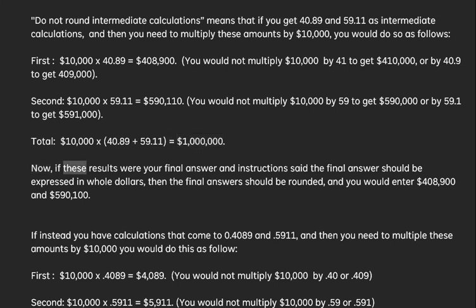Now, if these results were your final answer and instructions said the final answer should be expressed in whole dollars, then the final answers should be rounded, and you would enter $408,900 and $590,100.